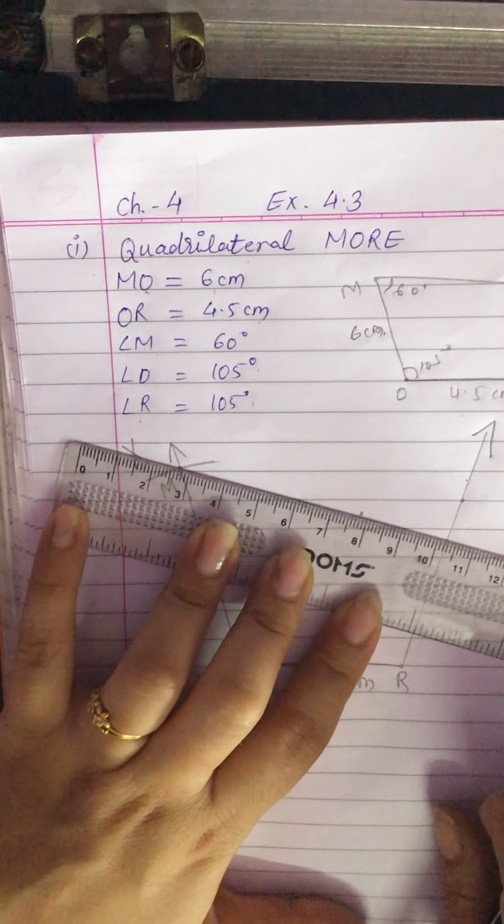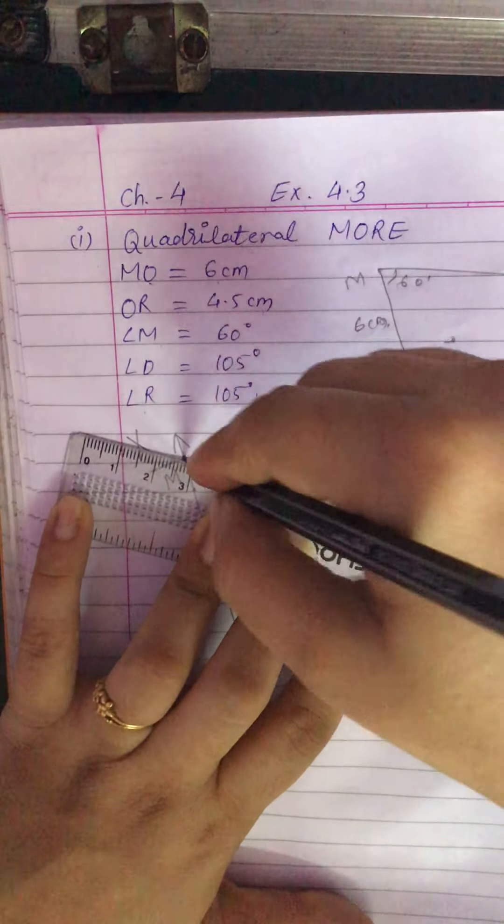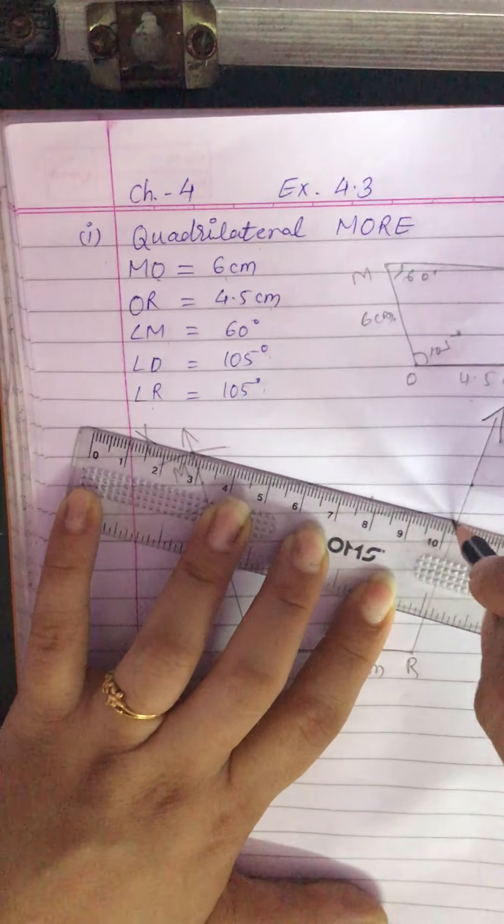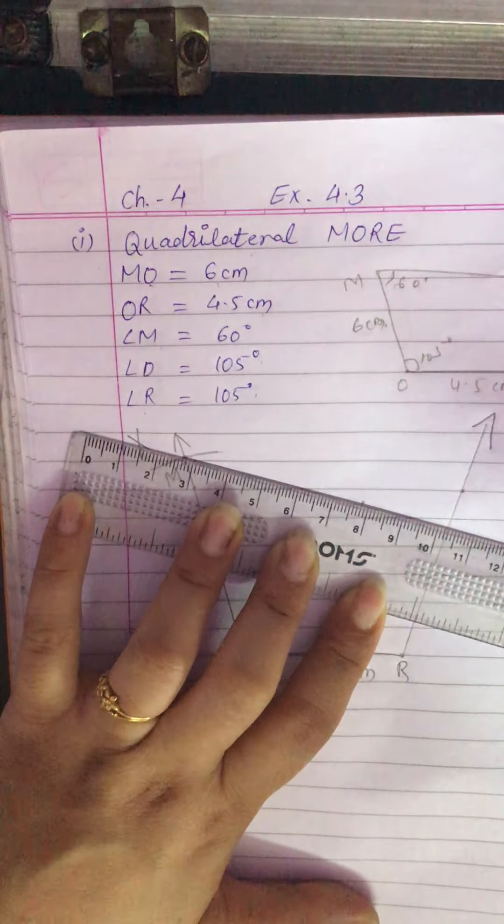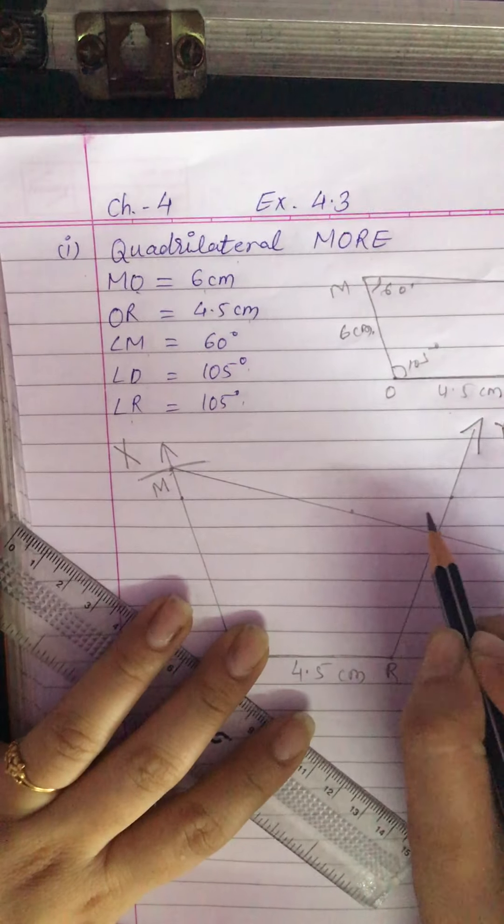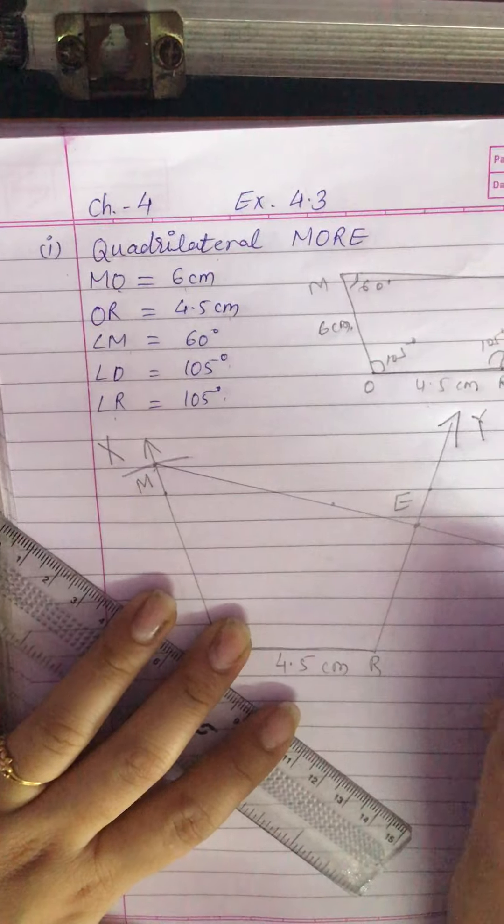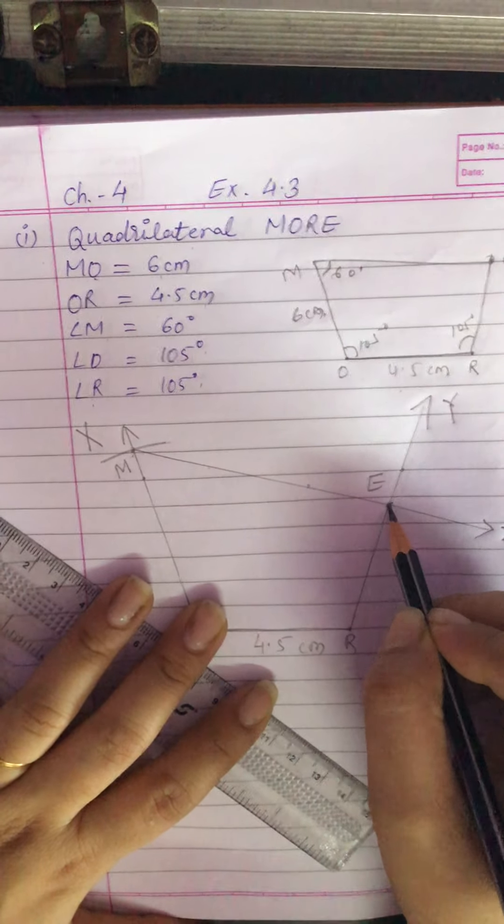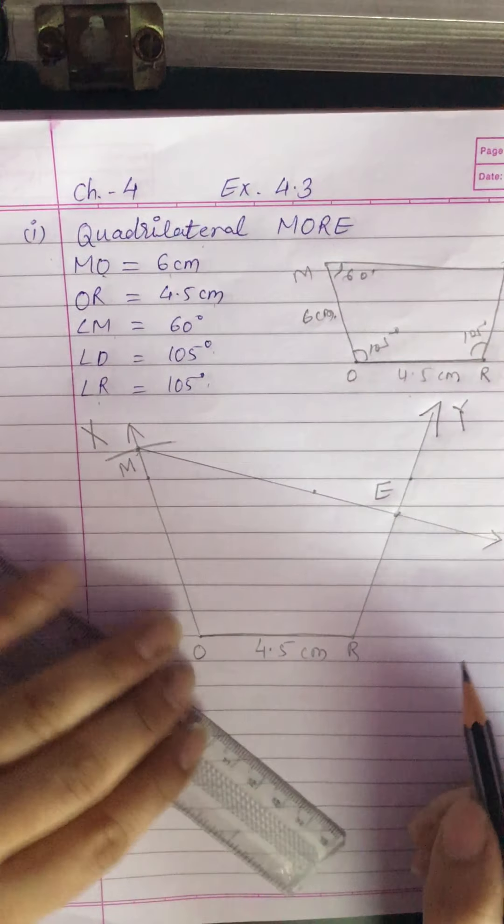Now this ray and the previous ray Y, both rays intersect at one point which is E. So ray MZ and ray RY both intersect at a point which is E.